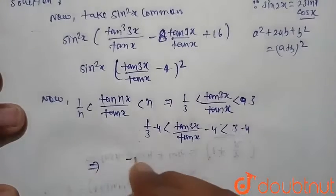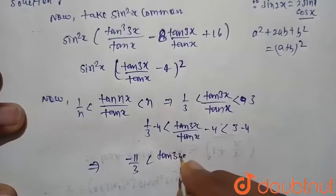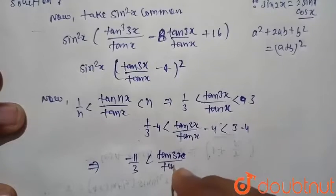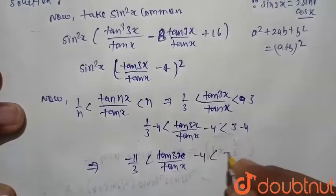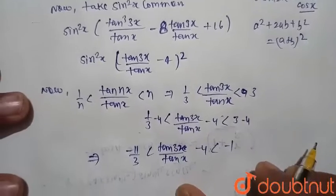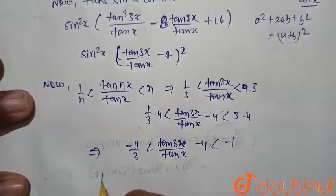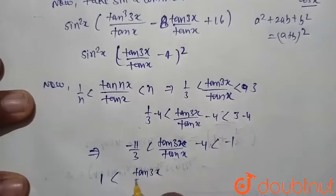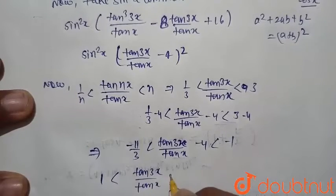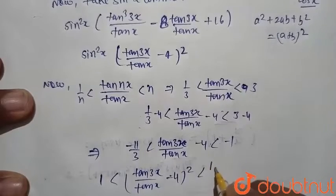This implies minus 11/3 ≤ tan(3x)/tan(x) minus 4 ≤ minus 1. Squaring this term, we obtain 1 ≤ [tan(3x)/tan(x) minus 4]² ≤ 121/9.